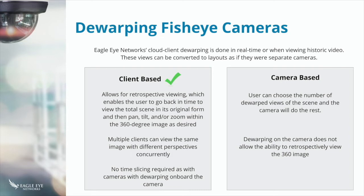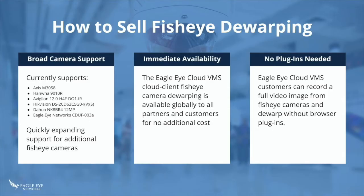You can virtually pan, tilt, and zoom without any special permission — if you have permission to view the video, you can do it — because it does not alter the recording. Previously, dewarping was camera-based. Some people chose to record the fisheye warped image, and others would add multiple views from that camera, where each view took up a separate subscription. That's no longer a requirement. Now you add the camera as a single fisheye warped view and we do the dewarping. Our initial release supports six camera models, with many more coming in the future.